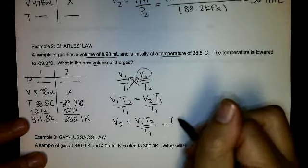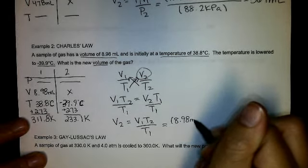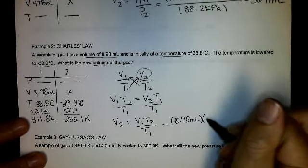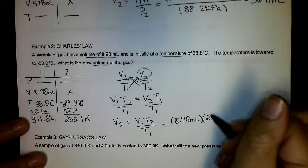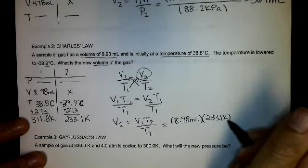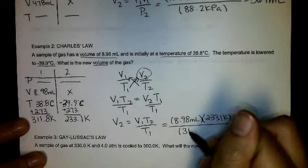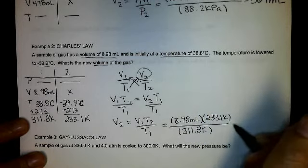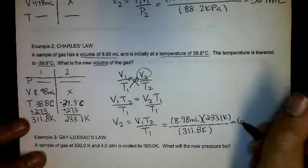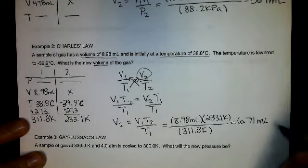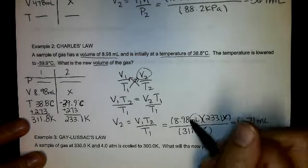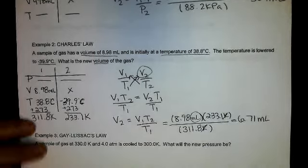Now I plug in my numbers, 8.98 milliliters. My T2 is 233.1 Kelvin divided by 311.8 Kelvin. I get 6.71 milliliters. Now with my Kelvin, cancel out with my Kelvin, and I'm left with milliliters.